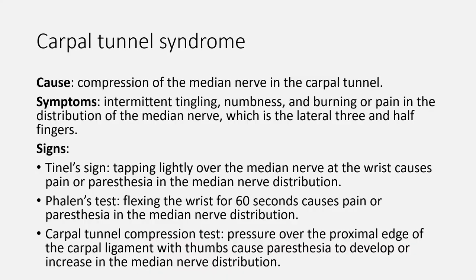One of the important conditions that cause pain in the upper limb is carpal tunnel syndrome. Carpal tunnel syndrome is caused by compression of the median nerve in the carpal tunnel at the wrist. Compression of the median nerve leads to paresthesia, pain, and decreased function of the nerve. Nerve dysfunction may become irreversible if axonal injury secondary to prolonged ischemia occurs. Typical symptoms include intermittent tingling, numbness, and burning or pain in the distribution of the median nerve, which is the lateral three and a half fingers. Symptoms are often worse at night and can disrupt sleep.